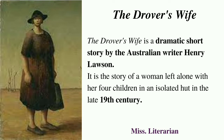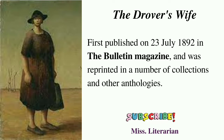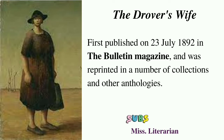The short story The Drover's Wife is about a woman who is left alone with her four children. She was left isolated in a hut during the late 19th century. This short story was first published in 1892 in the edition of the Bulletin magazine and was subsequently reprinted along with the author's other anthologies.